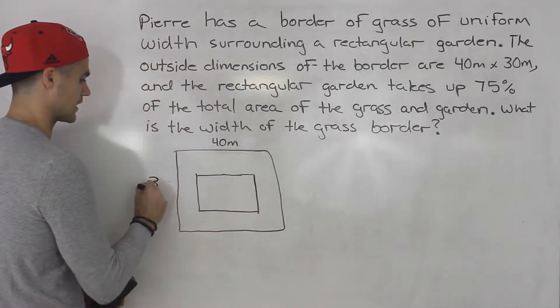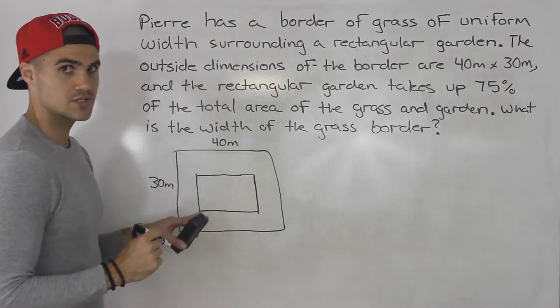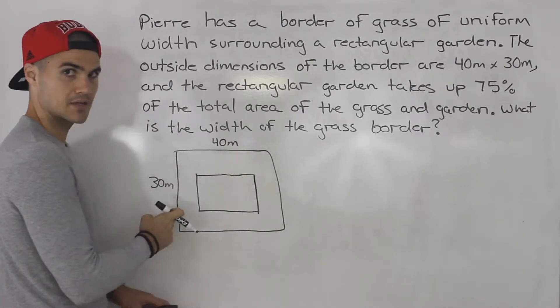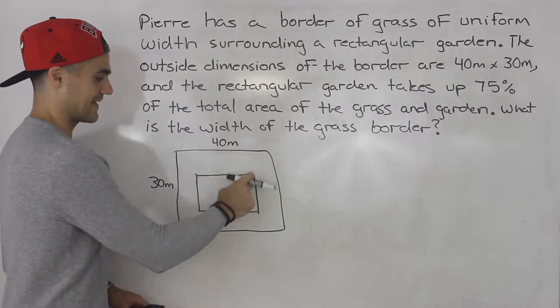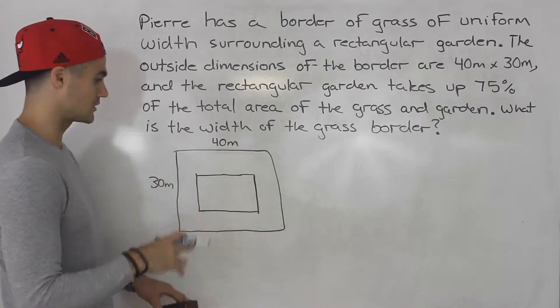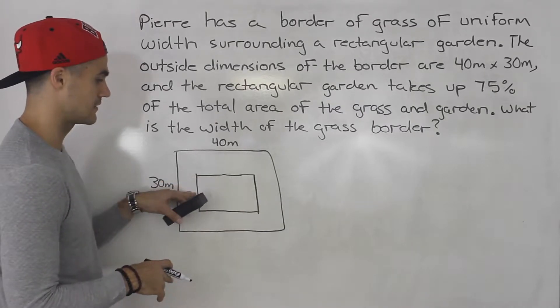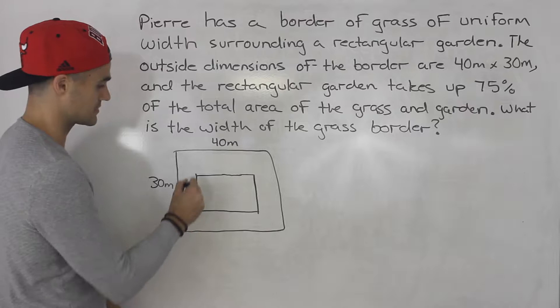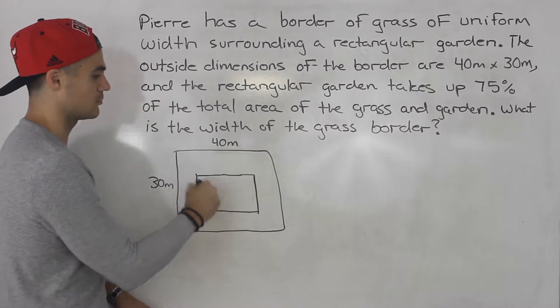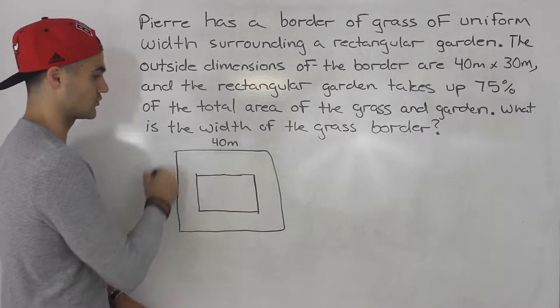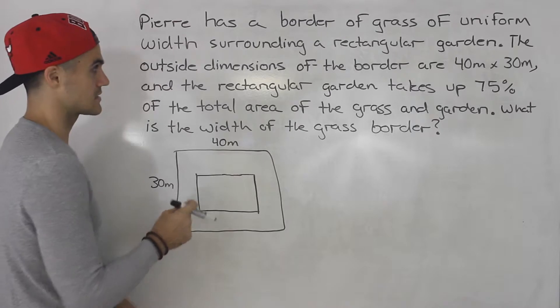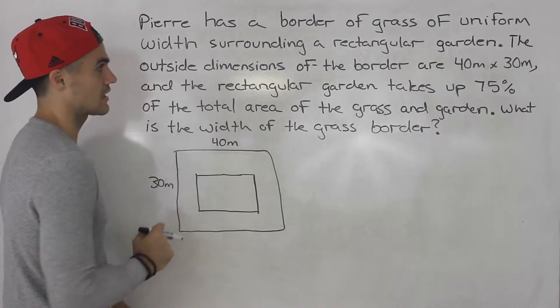As I mentioned in the lecture videos with these types of questions you got to be careful if they're giving you the outside dimensions or if they're giving you the inside dimensions. In this case they're giving you the outside ones but sometimes they could give you the inside dimensions. Sometimes this is like a pool and then there's a deck surrounding the pool and they'll give you the dimensions of the pool versus the total dimensions of the deck and the pool. In this case they are giving us the outside dimensions.